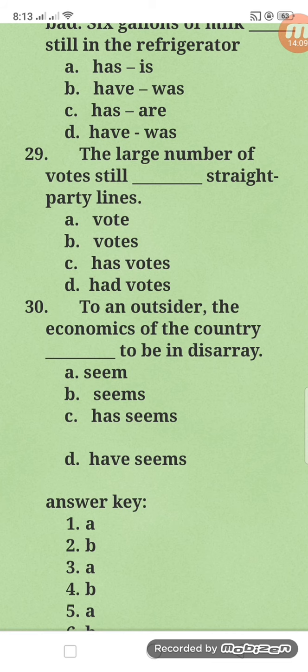Number thirty: to an outsider, the economics of the country seems to be in disarray. 'Economics' is singular. Take note of words that have an S but are actually singular: mathematics, aquatics, athletics, physics, economics, measles — these words look plural but are singular, so they take singular verb. The answer is letter B, 'seems.'